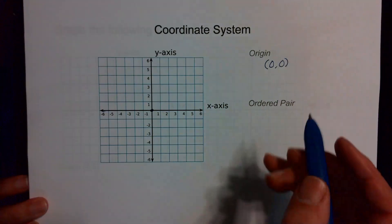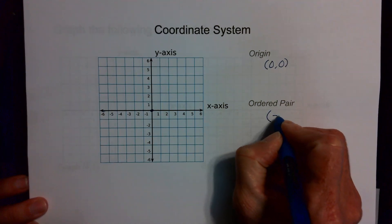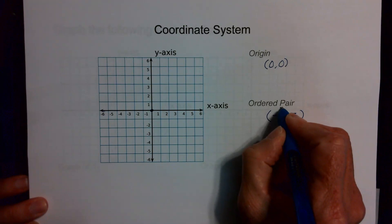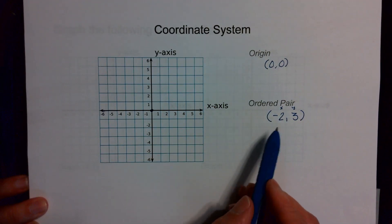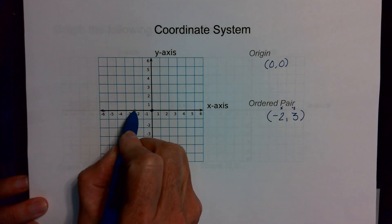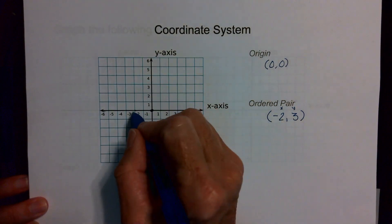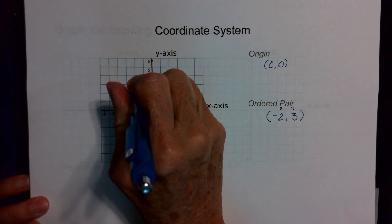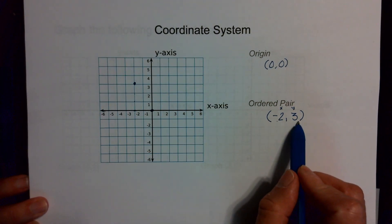Let's say I want to find the point negative two, three. This is my x value and this is my y value. I'm going to go over negative two on my x-axis, right here, and then I'm going to go up three — one, two, three. So that point right there is the point negative two, three.